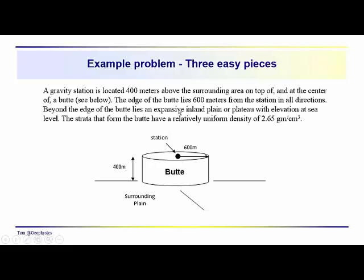And then beyond the edge of the butte lies this extensive plane. And we're assuming that the strata that form the butte have a relatively uniform density of 2.65 grams per cubic centimeter.